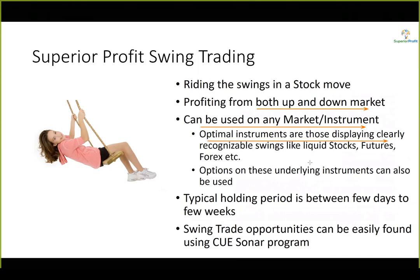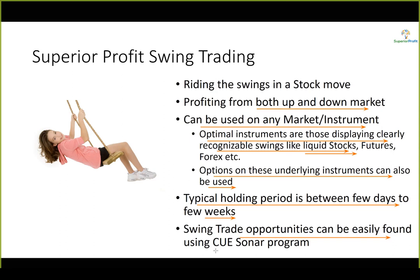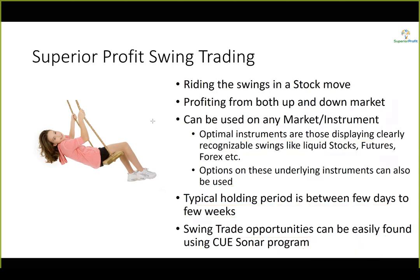The optimal stocks for swing trading are those that display clearly recognizable swings, which is common to liquid stocks — also common to futures and forex — but we will focus on stocks. Options on these underlying instruments can also be used. Swing trades tend to have a typical holding period of a few days to a few weeks. We can identify these opportunities easily using the search program in QSystem, i.e., QSonar. I will go through several trades from our traders community that were identified and taken using the QTrading system.